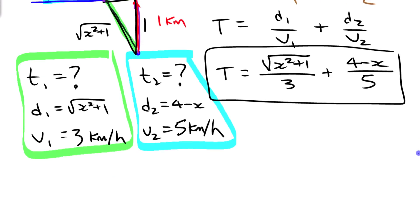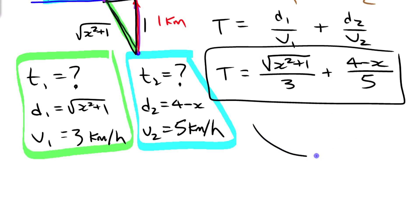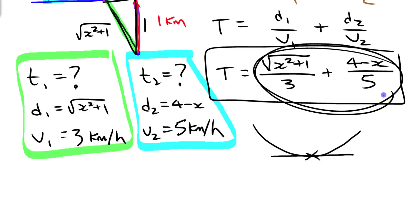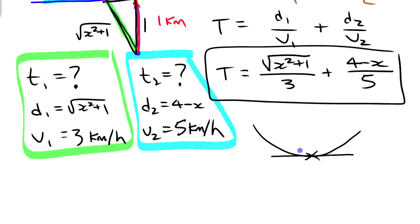To find that minimum value algebraically, we use the derivative. Whatever this function looks like graphically, there's going to be some kind of minimum point, and we find it by looking at where the derivative is zero. Since this function is defined for all values of x and never undefined, the only way to have a minimum is if the derivative is zero.